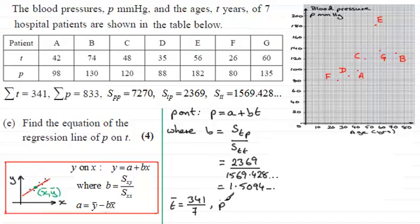For the mean of P, P bar, that's going to be the sum of all the P's, which is 833, divided by 7. And this works out quite nicely. It works out at 119 exactly.